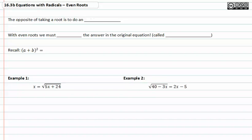Once again, it's important to remember that the opposite of taking the square root of both sides is to do an exponent or raise both sides of the equation to an exponent. With even roots, we must check the answer in the original equation. This is called checking for extraneous solutions.